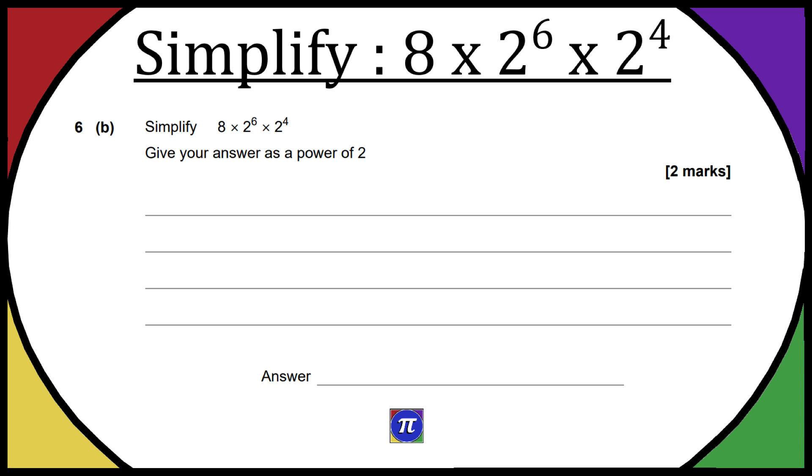So, the first thing I would do is tackle these 2s, and because it's written as 2 to the power of 6 times 2 to the power of 4, we can just add these powers. So, we can write it in the form 8 times 2 to the power of 10.